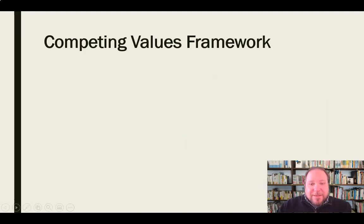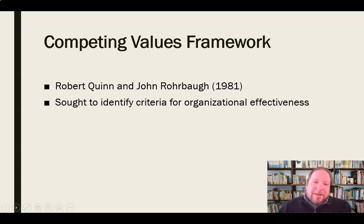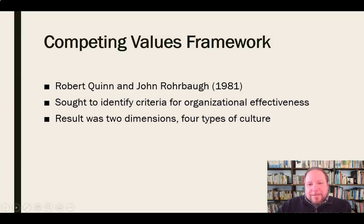Specifically, we'll look at those represented in the Competing Values Framework, known as the CVF. The CVF was developed by Robert Quinn and John Rohrbaugh, researchers at the University of Michigan. In 1981, they were seeking to identify the criteria for organizational effectiveness — how would we identify and determine what we mean by organizational effectiveness? As part of their research, they came up with the Competing Values Framework, which uses two dimensions to identify four types of culture.